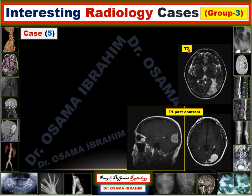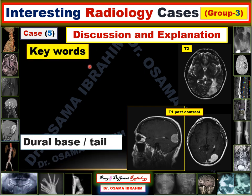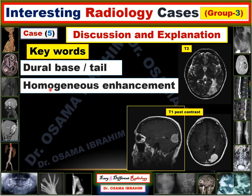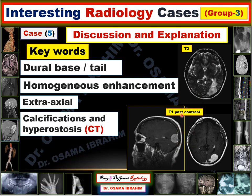The lesion also appears as bright signal on T2, surrounded by a small amount of edema. The first key word is the dural base of the lesion — it is sitting in the dura, confirmed in axial and sagittal imaging across all pulse sequences. The second key word is the dural tail enhancement. The third key word is homogeneous enhancement on post-contrast study, including the dural tail, and the extra-axial location. On CT, the presence of calcifications and hyperostosis would also raise the possibility of this diagnosis.